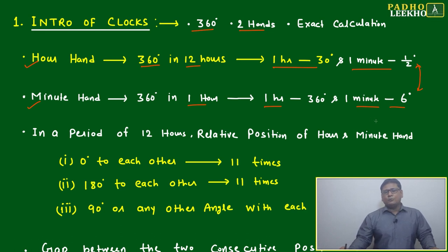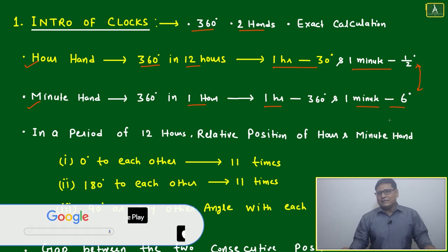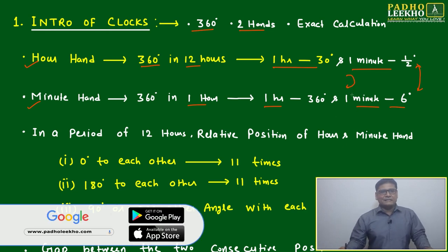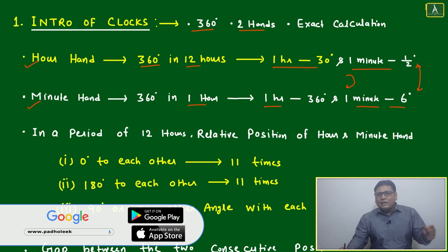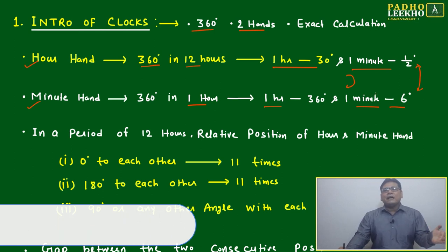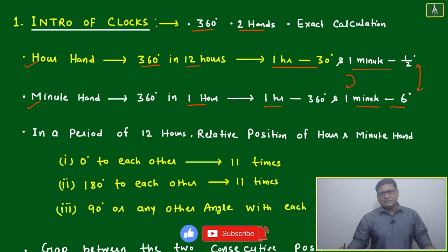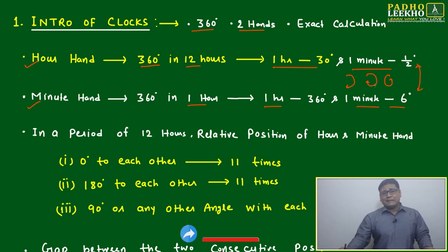Both are going in same direction. Both are running clockwise. Clockwise means generally one convention is there - the rotation we are defining based on the direction of clock. Clockwise means like this, anti-clockwise means like this.